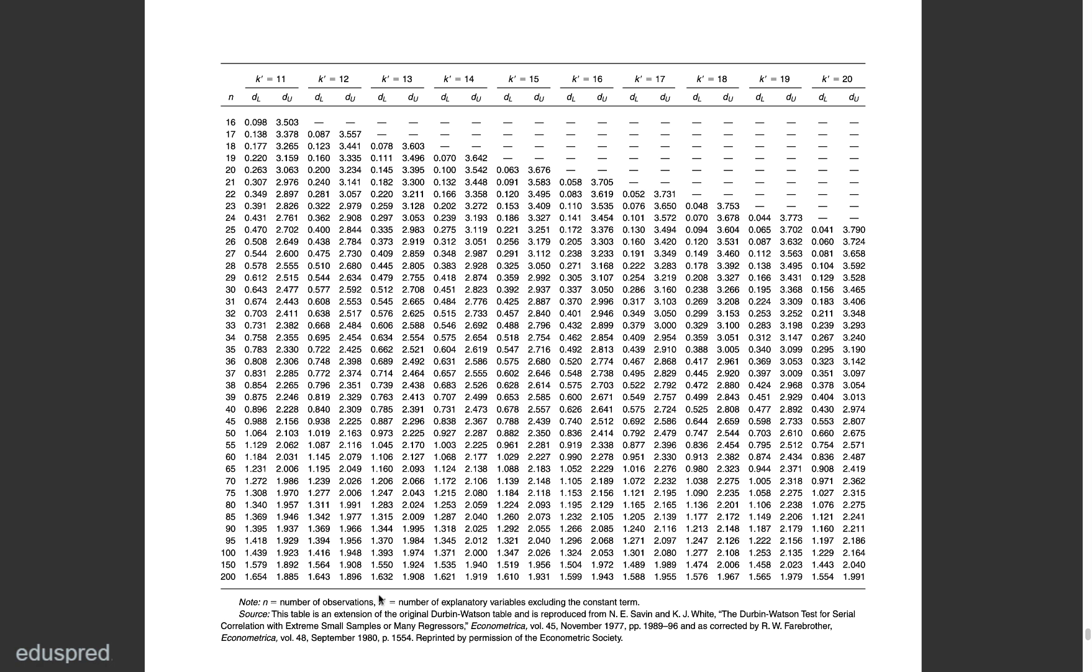This is an extremely important step. Because if you end up choosing the wrong column, then your entire answer can be wrong. Pay attention over here. It's written over here that K' is the number of independent variables excluding the constant term.